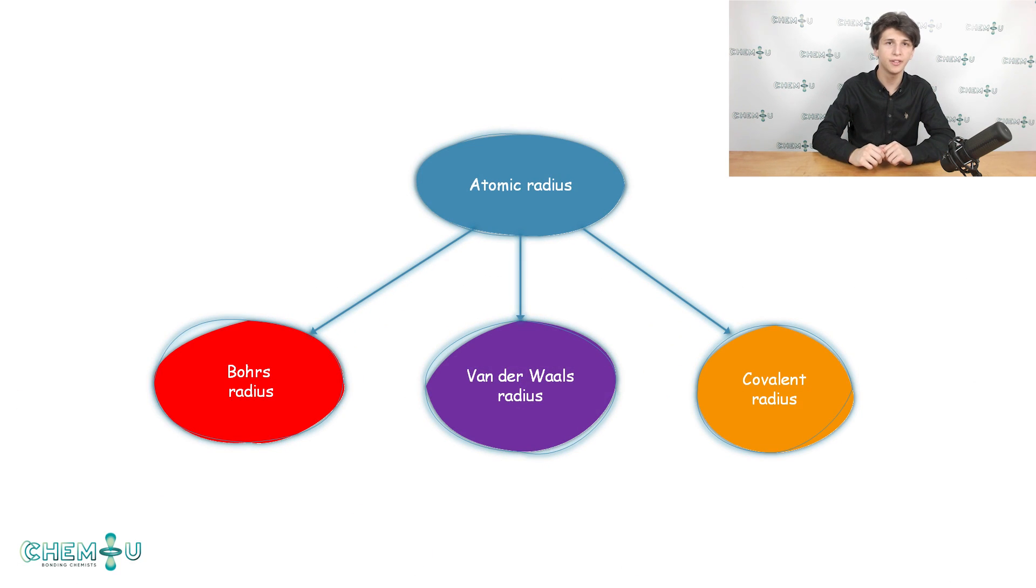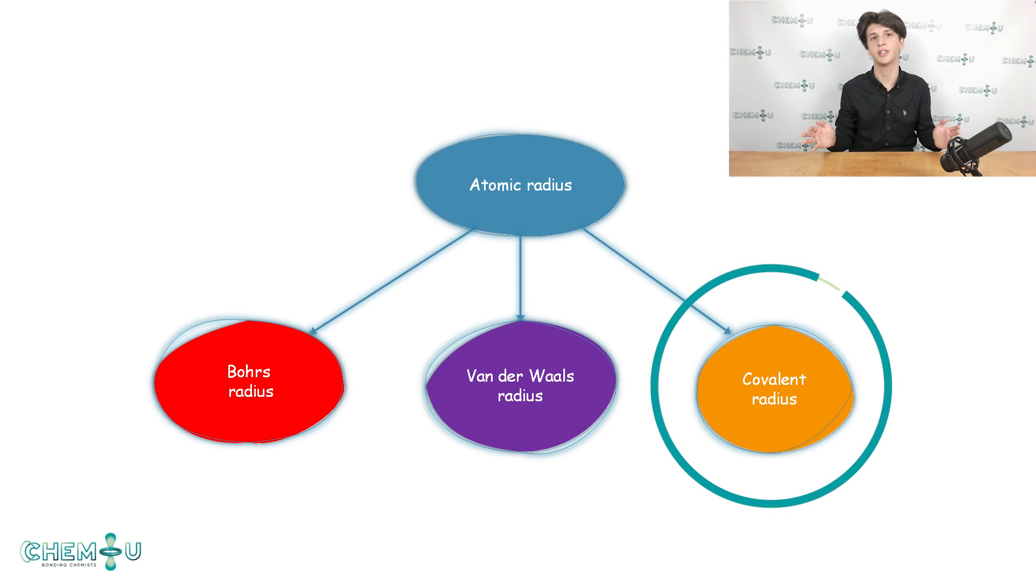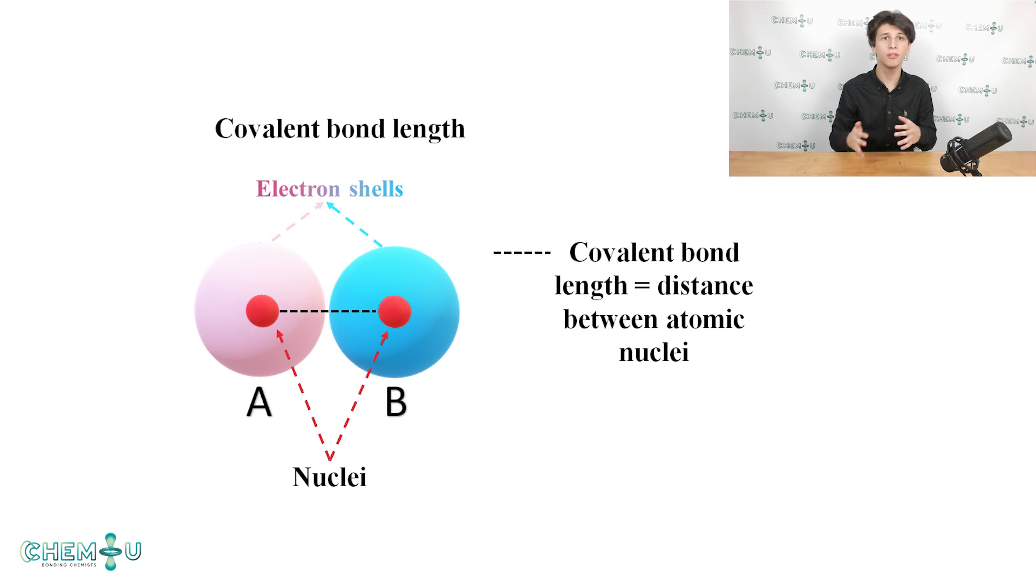The last atomic radius definition for today is the covalent radius. To define the covalent radius of an atom we need to define the covalent bond length first. The covalent bond length between atoms A and B is equal to the distance between their nuclei. Yeah, it's that simple.